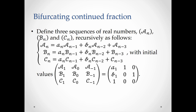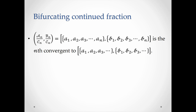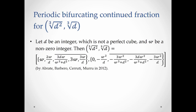Similar to the quadratic case, we have to find the formula for the nth convergent to a bifurcating continued fraction. We define three sequences of real numbers aₙ, bₙ, and cₙ recursively like this, such that the couple aₙ/cₙ and bₙ/cₙ is the nth convergent to the bifurcating continued fraction. Again, the nth convergent is an approximation of the bifurcating continued fraction. Similarly, we have to find a periodic representation of the cube root of d. By the work of Ebert, Barbaro, Cerruti, and Muru, it is found that when d is not a perfect cube, the couple — cube root of d squared and cube root of d — has a very nice representation like this, where w is a non-negative integer.